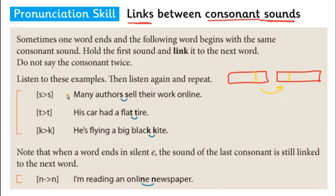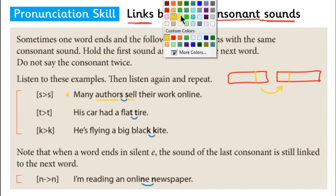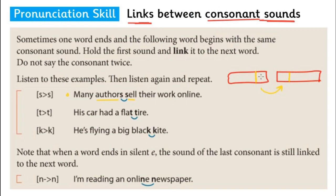Look at this first example. You have the word 'authors' and you have the word 'sell.' This word ends in the consonant sound S, and this word starts with the consonant sound S — it's the same consonant sound. So we link these two words when we're speaking. Let's listen: 'Many authors sell their work online.' These two words are connected when we pronounce it.